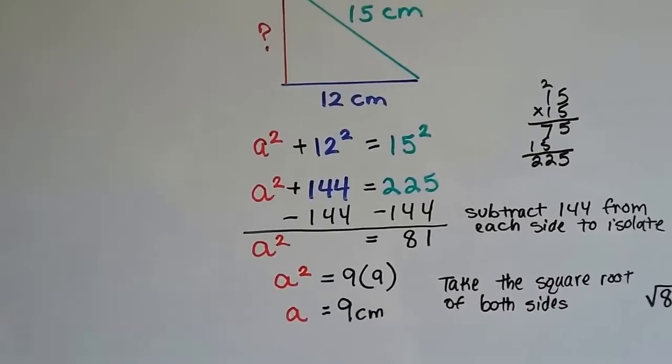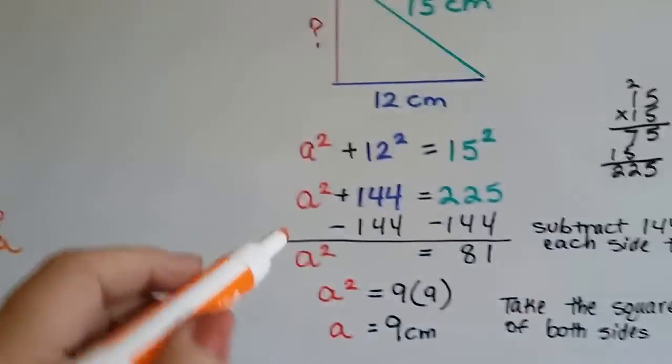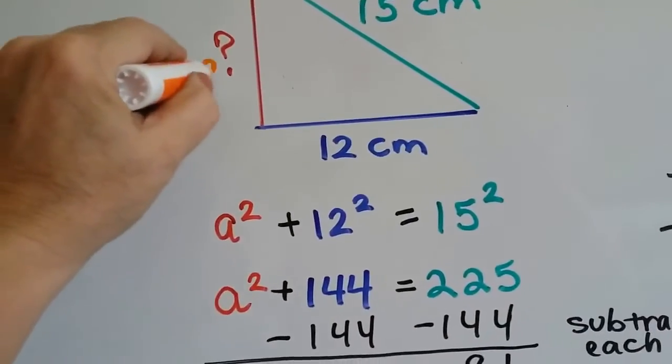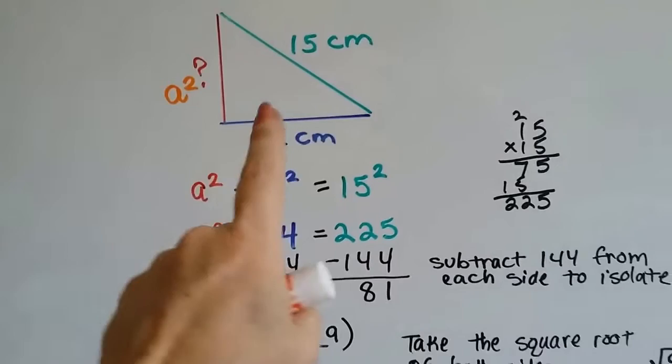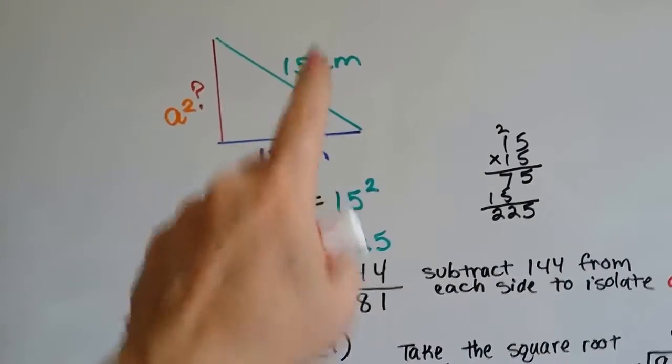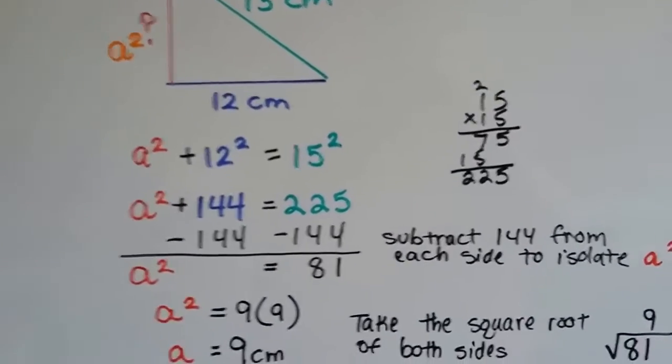We do the same thing we did before. Our formula says a² + b² = c². So we've got a² – this times this – plus this times this equals that 15 centimeters, squared.